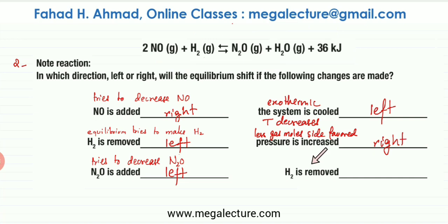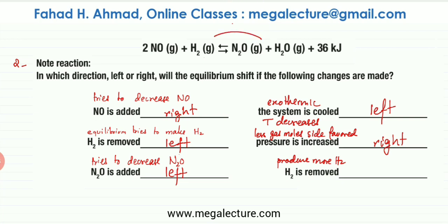The last part of this question is that H2 is being removed. The equilibrium will do the opposite — it's going to produce more H2. The way more H2 could be produced is if the backward reaction is favored, so more H2 gas would be produced in the backward direction. The equilibrium shifts to the left-hand side.